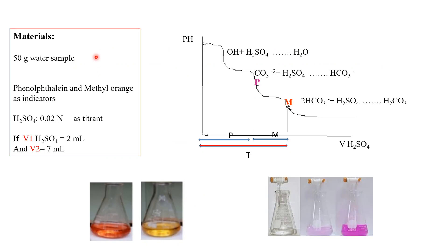In this test method, we need a certain amount of water — for example, 50 grams of water sample — phenolphthalein and methyl orange as indicators, and sulfuric acid as the titrant.